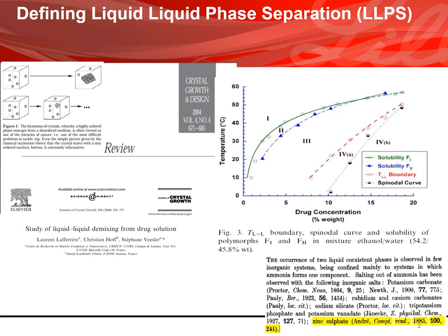In this paper from Laurent Laferrer, I'm showing the phase diagram of a polymorphic system where two polymorphs are enantiotropically related, with a crossover temperature. The green and blue curves correspond to the solubility of those two polymorphs. The red curve corresponds to the binode — the liquid-liquid equilibrium of the two phases. If you cool down a solution at a given concentration, the first oil droplets will occur at contact with the spinodal curve, which is a kinetic boundary, whereas the binode is a thermodynamic boundary.